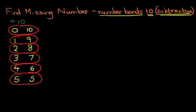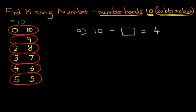So let's have a look at the first one. Suppose we have this: 10 minus something equals 4. Now, where can you find the number 4? We're going to look for number 4. Number 4 is over here — there it is. What is the number next to number 4? It is 6. That is our answer. It is 6. 10 minus 6 equals 4.